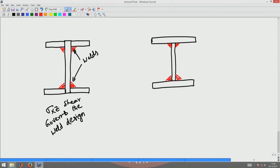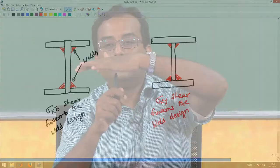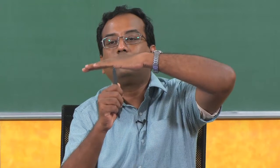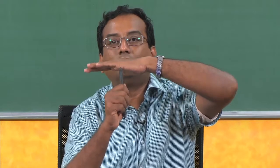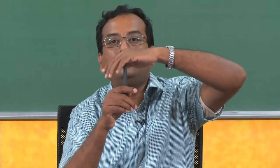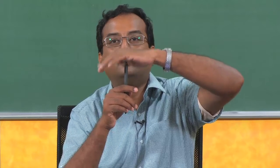The shear stress that governs the design here is sigma xy — it governs the weld design or the connection design. It can be nailed also, because in this case the web and flange sit like this. When there is differential bending, the flange is going to slide off, producing sigma xy shear. X is along the direction of the force, y is perpendicular to the web surface on which the flange is moving.